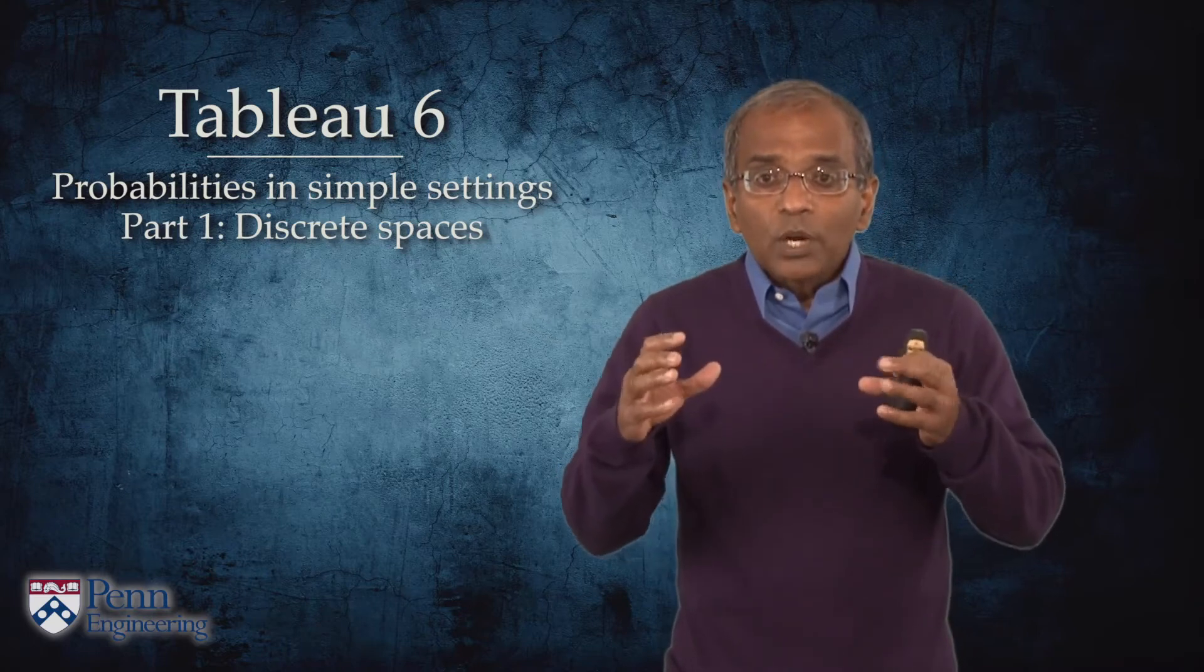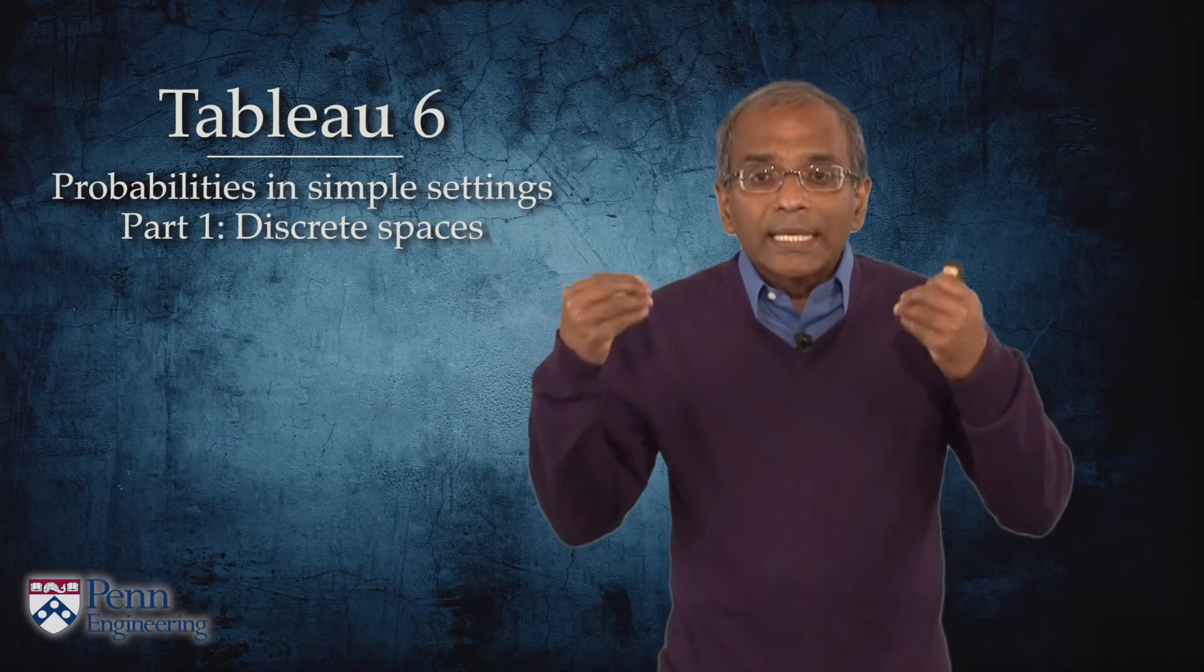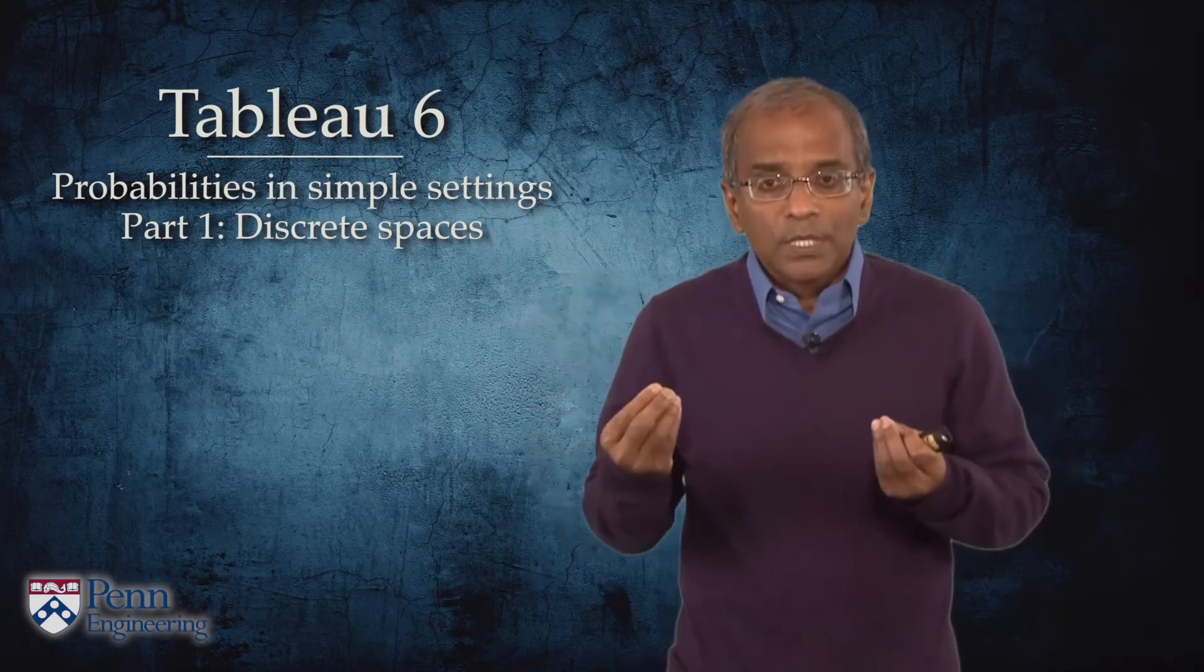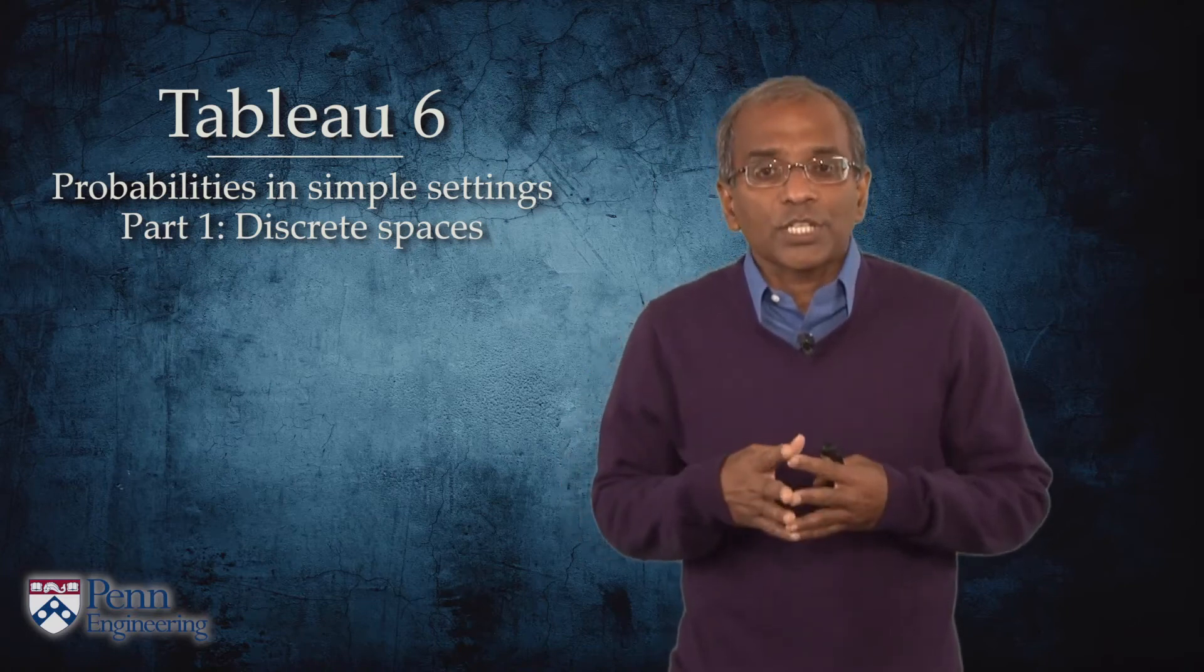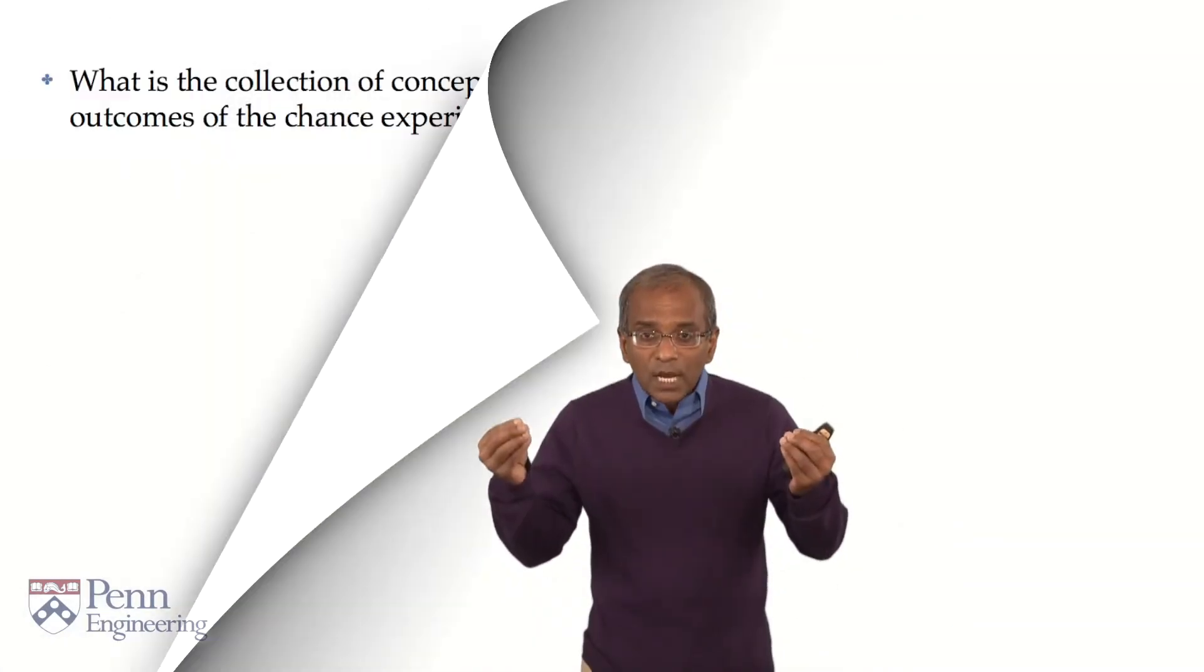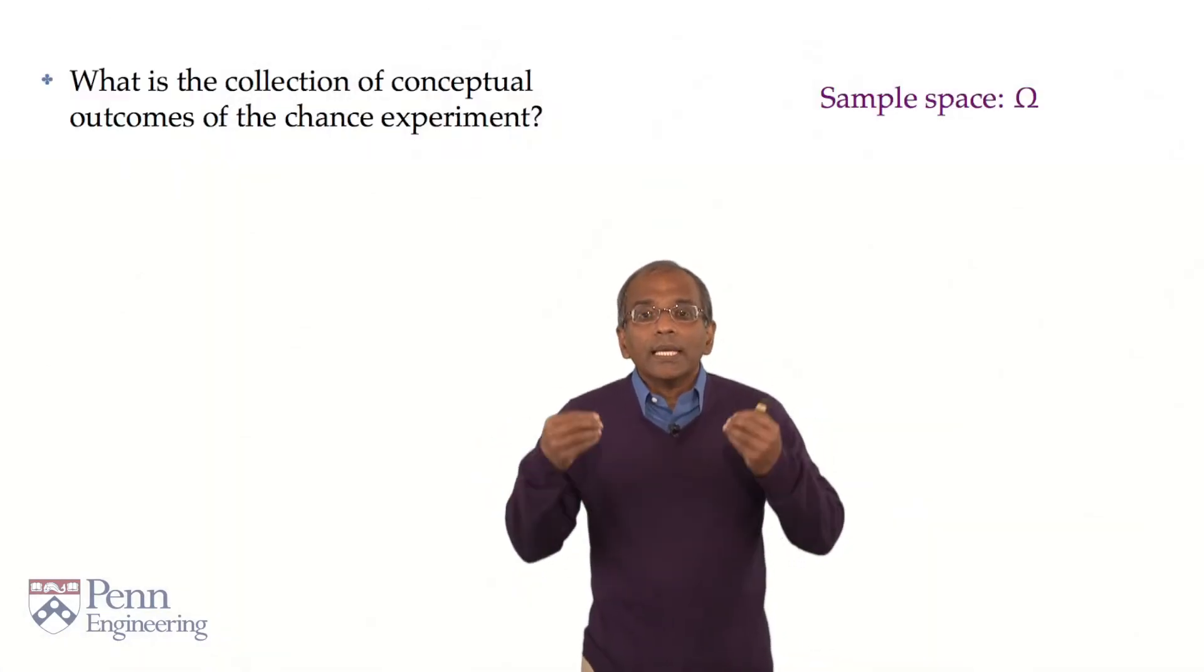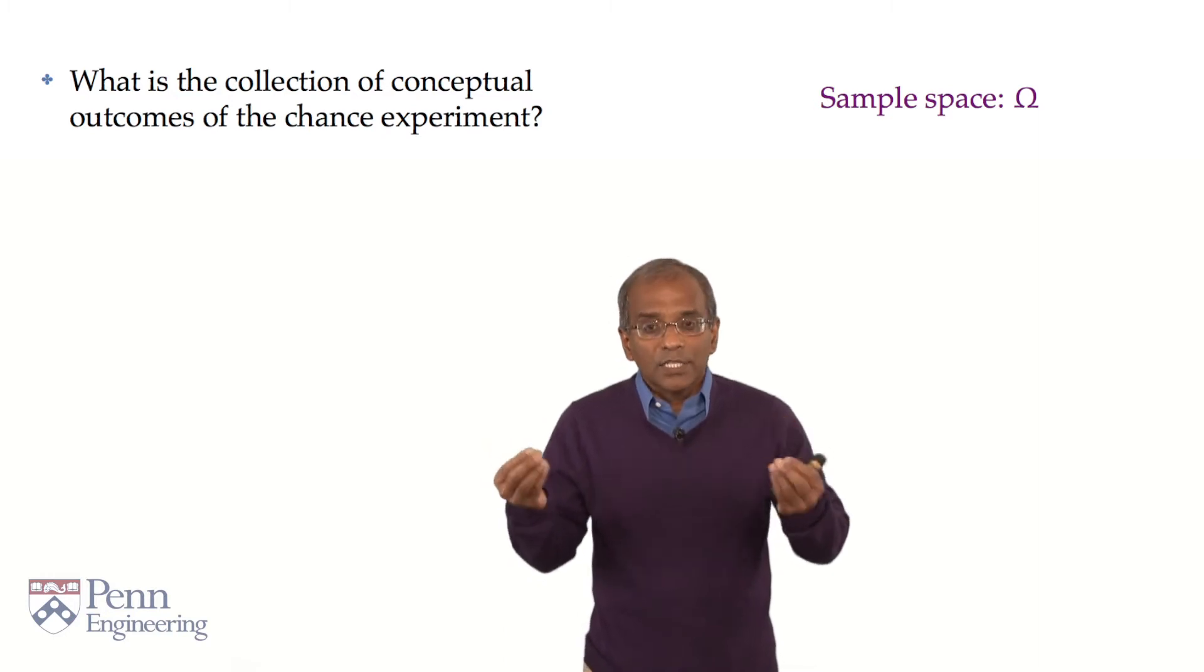The framework rests upon a conceptual Gedanken chance experiment and a collection of idealized outcomes for such an experiment. The set comprised of all conceivable outcomes is, in the language of Robert von Mises, what we call the sample space. Our first task is to identify the conceptual sample space under consideration.